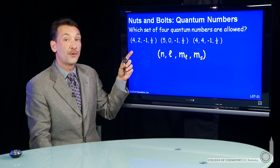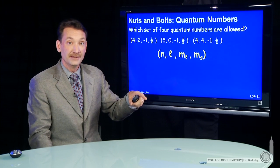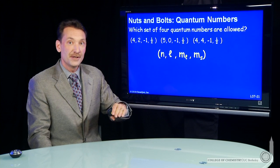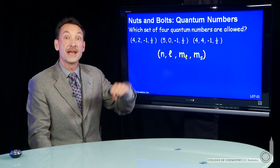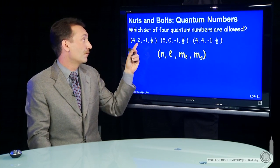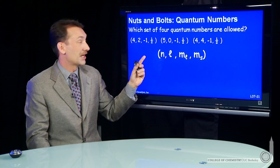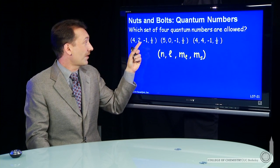So n equal 4, l equal 2. That's fine. l can be any value in integers between 0 and n minus 1. So when l is smaller than n, we're in good shape. So so far OK.